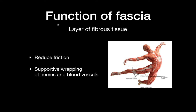The fascia is a layer of fibrous tissue that surrounds muscles, a muscle group, or organs. It has many functions, but some of them are to reduce the friction between the muscle and the surrounding area as the muscle contracts. Another function is that it works as a supportive wrapping of nerves and blood vessels as they pass through muscles.